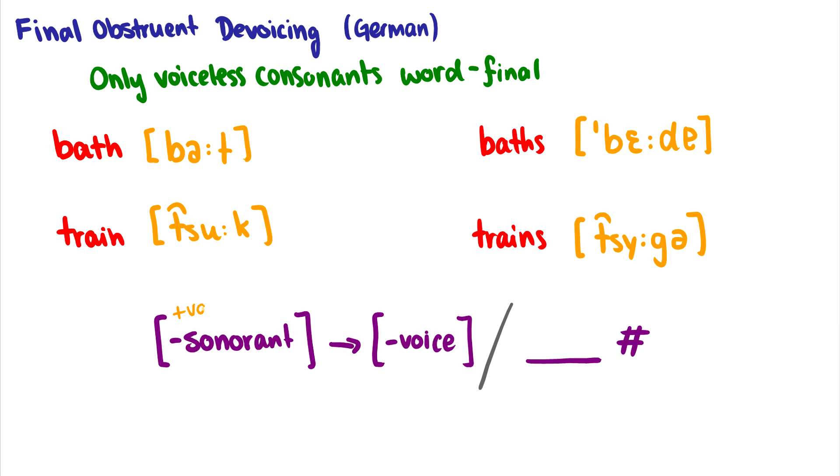Now, why didn't I specify plus voice here? Well, because if we target minus voice sounds too, does it really matter? Does it change anything? No, because if a minus voice becomes minus voice, there's no change. If a plus voice becomes minus voice, there is a change. So we don't even need to specify voice. Because we're saying, look, it doesn't matter what the consonant is at the end of the word. It's just going to be minus voice in the end. So we don't have to specify plus or minus voice in the initial condition. We just need to specify that it's a consonant and it's going to lose voice in the final position. That's final obstruent devoicing.